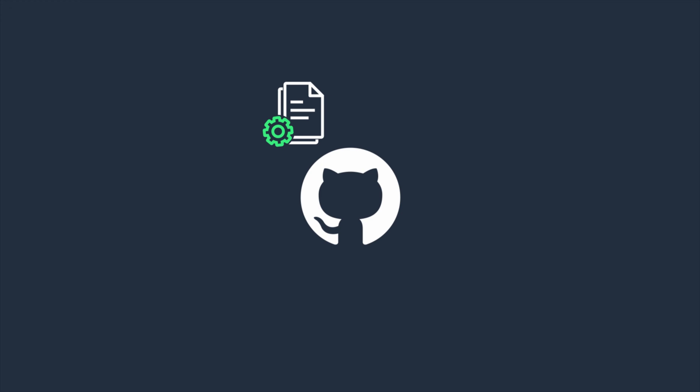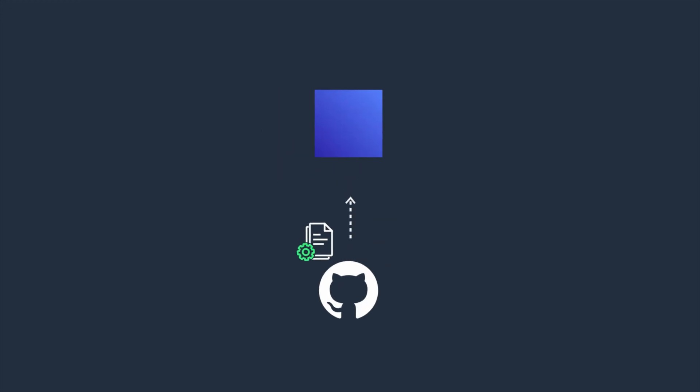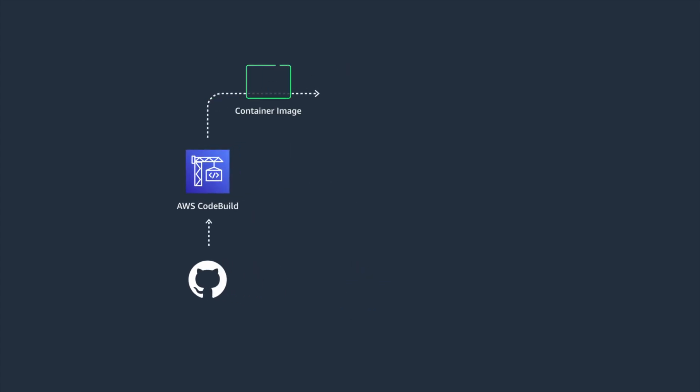We now need to turn this Dockerfile into a container image. I could try to do this on an EC2 instance, however by doing this I risk something going wrong with my scripts and the build failing. The best way to do that is to use AWS CodeBuild, which is designed to build a software package from source code files. Once AWS CodeBuild creates the container image, it will push it to Amazon ECR.